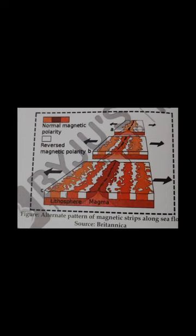This process repeats over and over again, giving parallel bands on either side of the MOR and an alternate pattern of magnetic stripping on the seafloor. The seafloor shows alternate patterns of normal and reversed magnetic polarity on either side of mid-oceanic ridges.